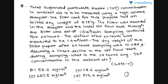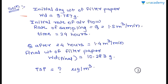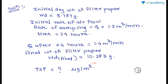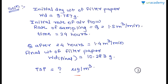Before going to the solution, let's see what is given. The initial dry weight of the filter paper is 9.787 grams. The initial rate of air flow, that is rate of sampling, is 1.5 m³/min. Time is 24 hours. Q after 24 hours is 1.4 m³/min. The final weight of filter paper is 10.283 grams.